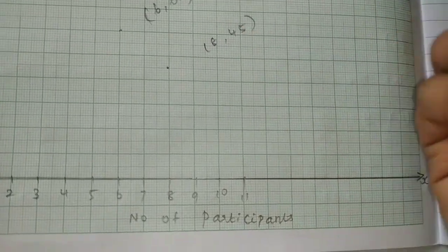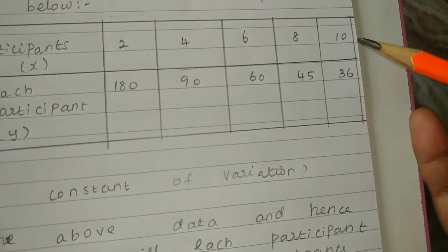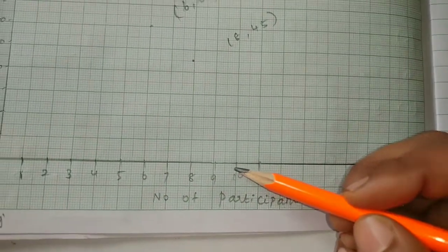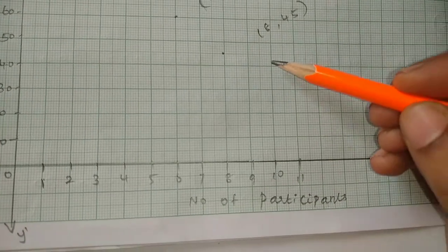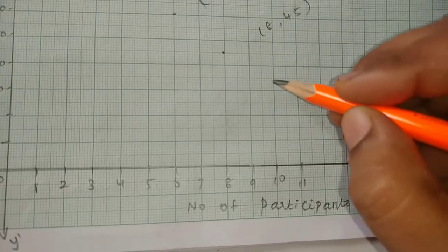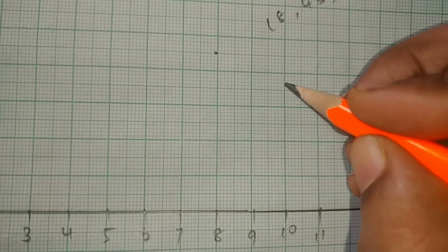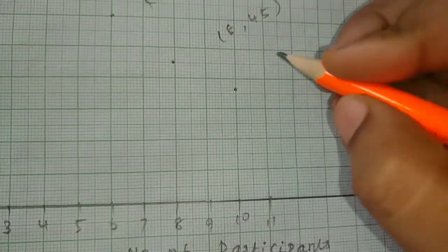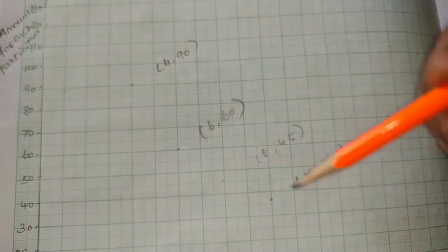This is inverse variation, so this is a curve. Next point: (10, 30). So 10 is here and 30 is here — mark (10, 30). Now all points are plotted. Join them to form a smooth curve.